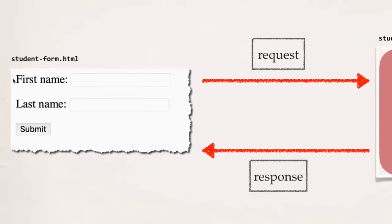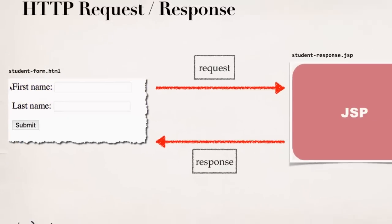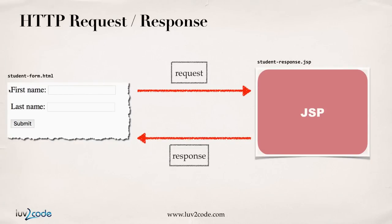What we're going to do here is build an HTML form to read student information. We're going to prompt the student for their first name and last name. They'll enter it into a text field, and once they enter that data they'll hit the submit button. That data will then be sent over to a JSP page for processing. The JSP page will read the form data for the first name and last name, and send back a confirmation page to the browser.